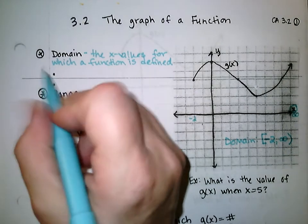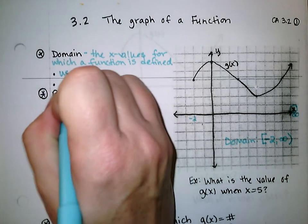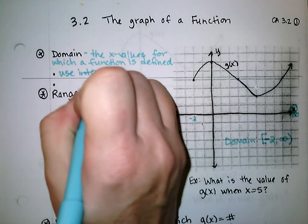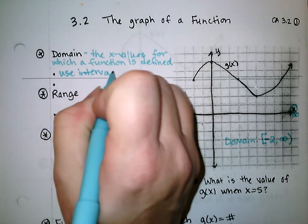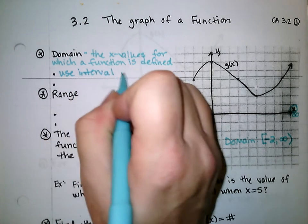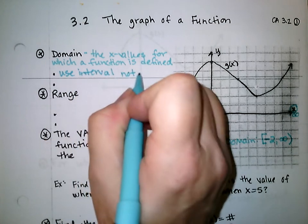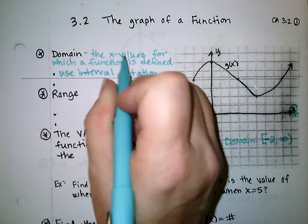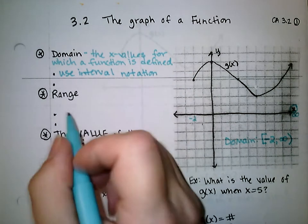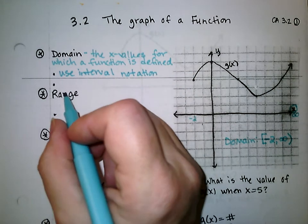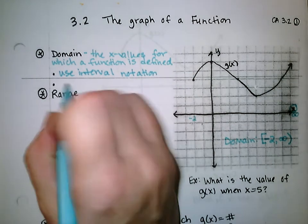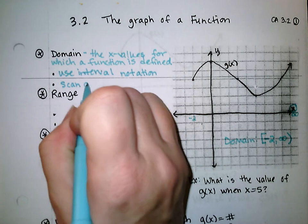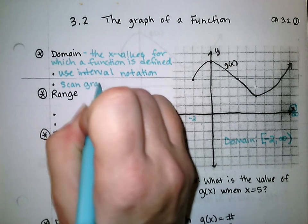For domain, we want to use interval notation with x values. When you have a graph, you're going to scan the graph left to right.